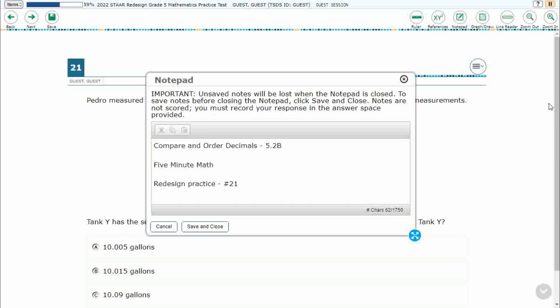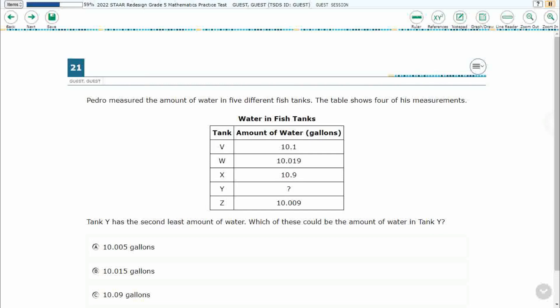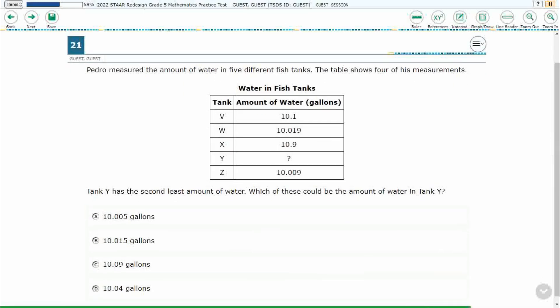Hello, and welcome to 5-Minute Math. Today we are looking at the 5th grade concept of comparing and ordering decimals. This is Standard 5.2b in the great state of Texas, and we are using item number 21 off the Redesign Practice Online Star Test. If you haven't done so already, please go ahead and take a moment to pause the video, work this problem out on your own, unpause it, and we will look at our answers together.